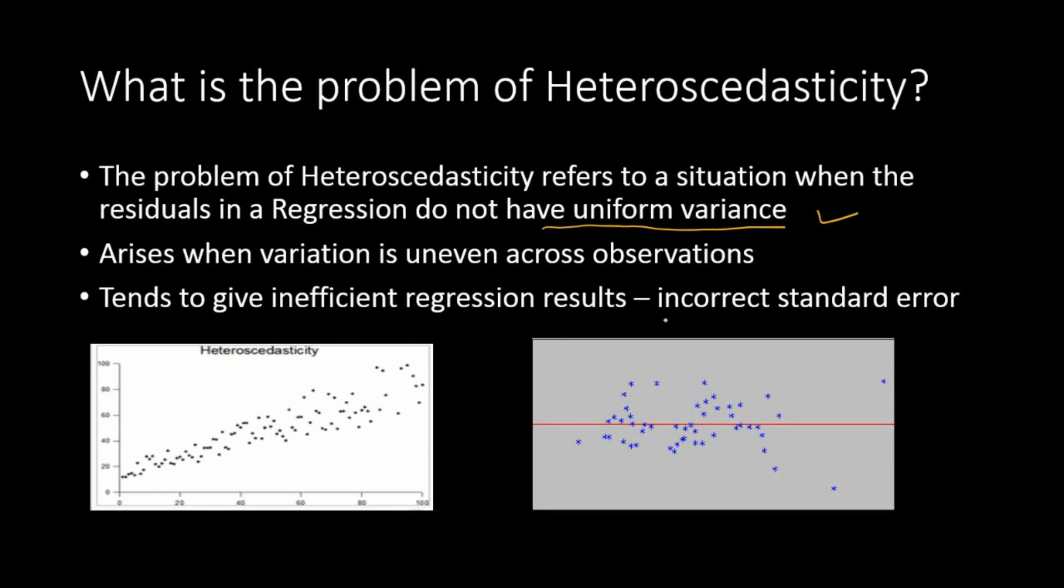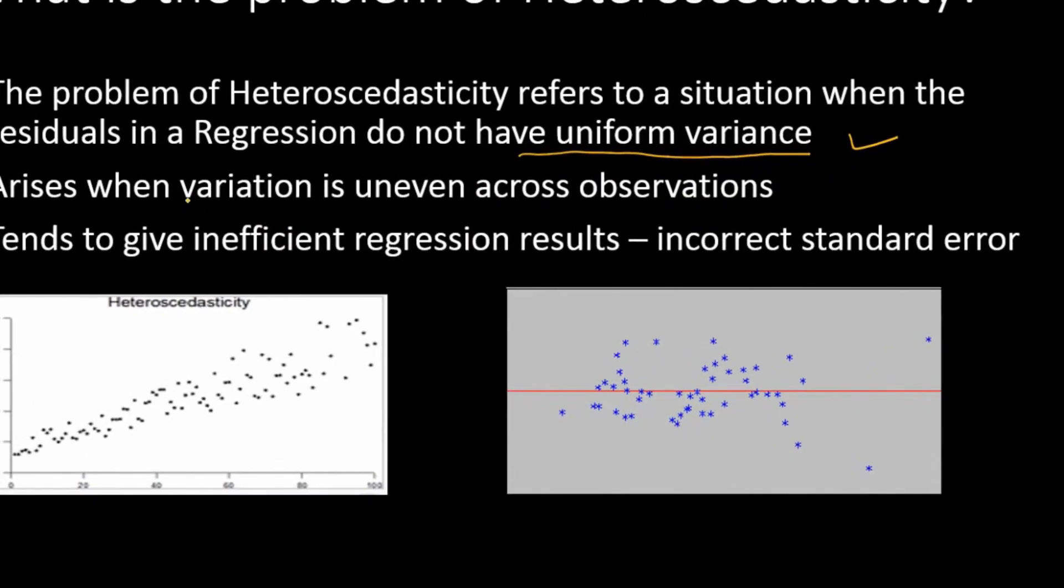This is one of the assumptions in least square regression—that the errors should have uniform variance. This problem arises when there is uneven variation across observations.